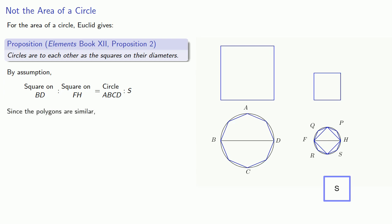Now since the polygons are similar, the squares on their diameters are to each other as the polygons are to each other. But since these are the same ratios, the circle is to S as the polygons are to each other.